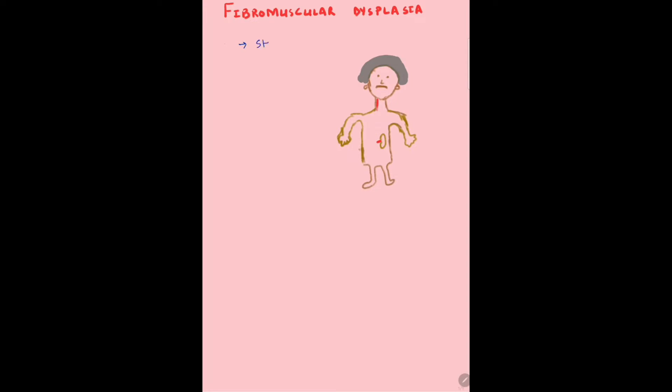Stenosis means the narrowing of the artery. It can also result in dilation, which is called an aneurysm. If a vessel is abnormally dilated, that's an aneurysm.